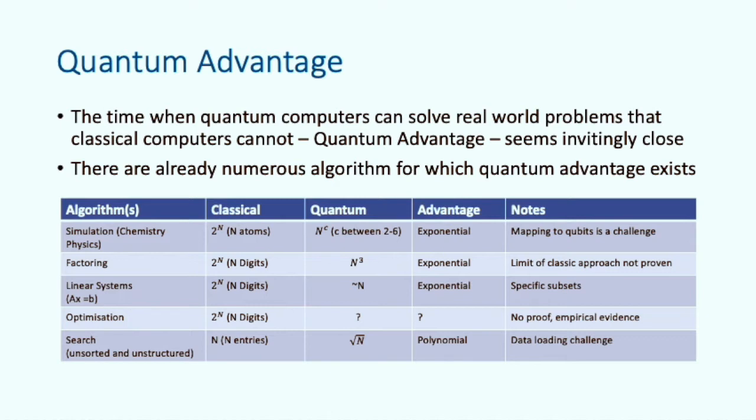We already know a number of algorithms that have proven advantage over known classical solutions as the size of the problem grows. Simulation, factoring and linear systems, the complexity grows exponentially as the size of the problem grows. The quantum equivalent only grows polynomially as the size of the problem grows. As we saw on the previous slide, the time difference between solving a classical algorithm with exponential runtime and a quantum algorithm with polynomial runtime can be staggering. 24 minutes versus the lifetime of the universe.